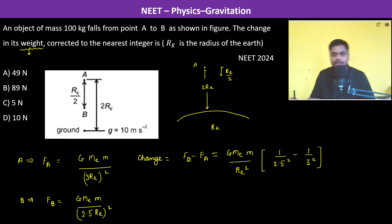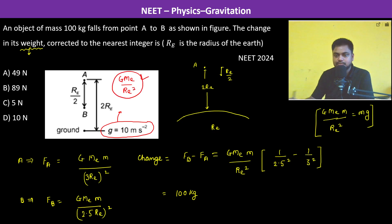That is the change in the weight. Now GMEm by Re square, this is equal to mg. So therefore this is equal to mg. Mass is 100 kg. Now why is this equal to mg? Because as it is mentioned in the question, g is equal to 10 meter per second square. So GME by Re square is basically mg—this is acceleration due to gravity.